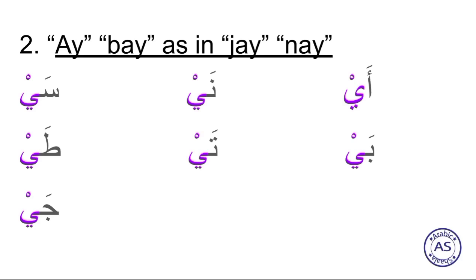Here we have some examples in which the first letter is changed and the second letter is Ya. Pronunciations: 'I', 'Nay', 'Say'. The second line is the example of the letter Ba — 'Ba', 'Tay', 'Tay'. The seventh one is 'J'.